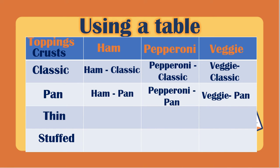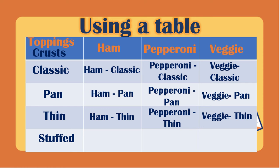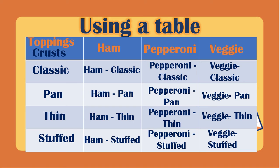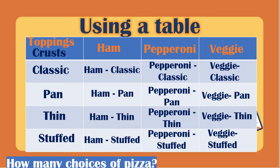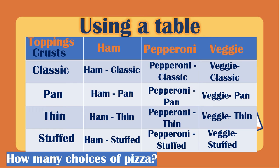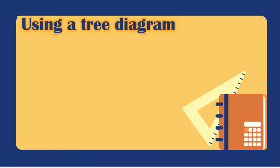Continuing the table: veggie pan; for the thin crust, ham thin, pepperoni thin, and veggie thin; and for the stuffed crust, ham stuffed, pepperoni stuffed, and veggie stuffed. That is how we represent the problem using the table. So how many choices of pizza can we have? We have 12 options. Next, we will represent it using a tree diagram.